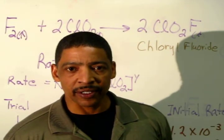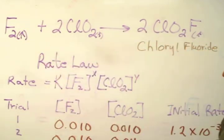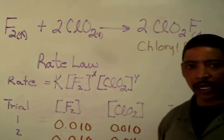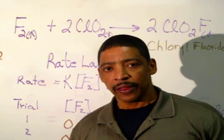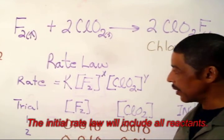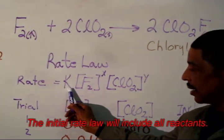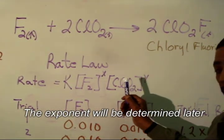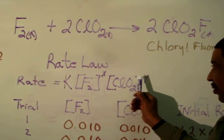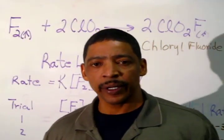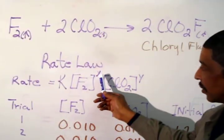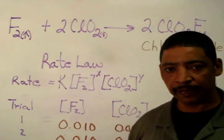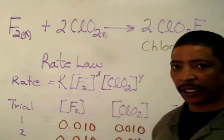As a practical example, consider the reaction between chlorine gas and chlorine dioxide to produce the compound chloryl fluoride. The rate law for this reaction may be written as: rate is equal to K times the concentration of chlorine gas raised to some power, times the concentration of chlorine dioxide raised to some power. In a rate law, the exponents used for each of the reactants are not based on the molar ratio — the exponents must be calculated by experimentation.